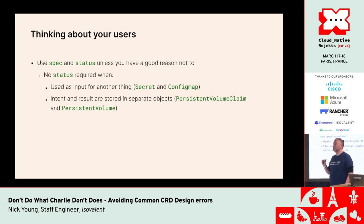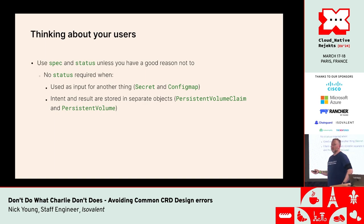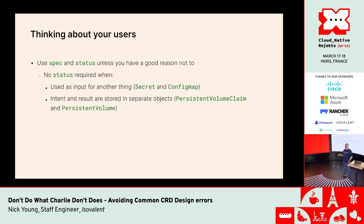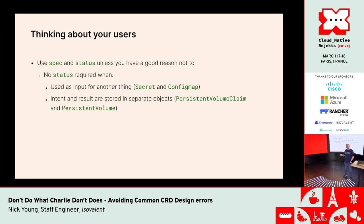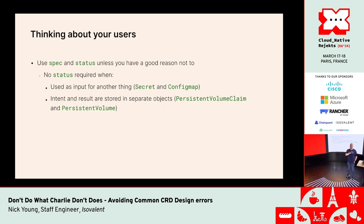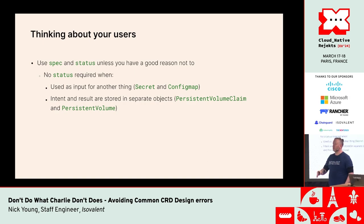You want to use spec and status unless you have a very good reason not to. Spec is the intent your user wants and status is the result they got. You don't need status when it's used as an input for another thing, like Secret and ConfigMap, or when intent and result are stored in separate objects like PersistentVolumeClaim and PersistentVolume.